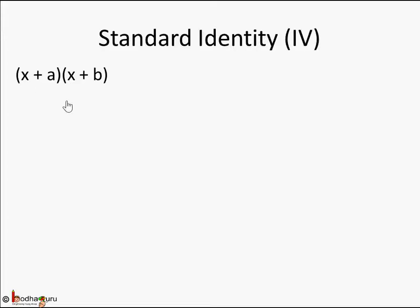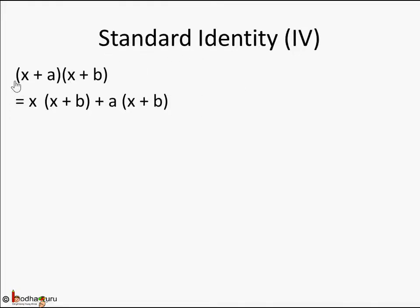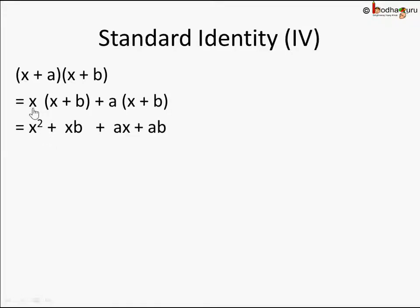Let's try to find it. We write x(x + b) + a(x + b). I am trying to derive the formula for Standard Identity 4. We take the multiplicand, take its first term x, multiply it with the multiplier (x + b), then a comes and is multiplied with the multiplier. Now using the distributive law we can open this — a(b + c) = ab + ac — so we write x·x = x², and x·b = xb.